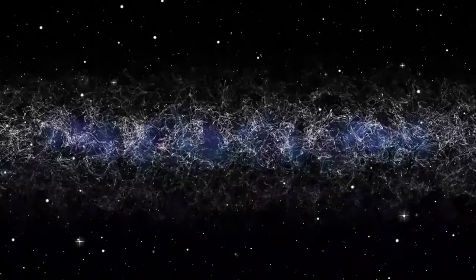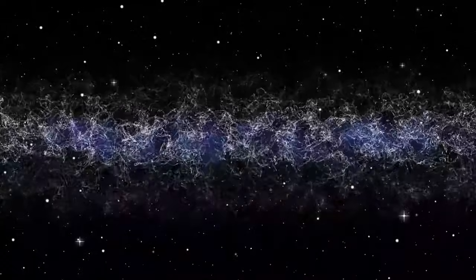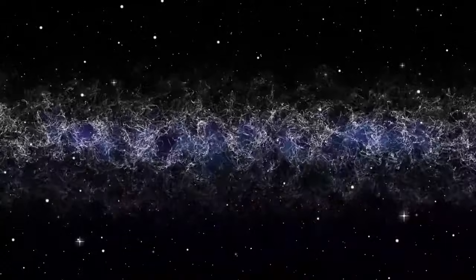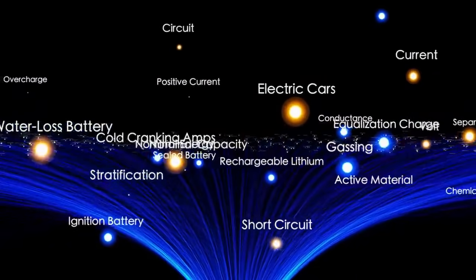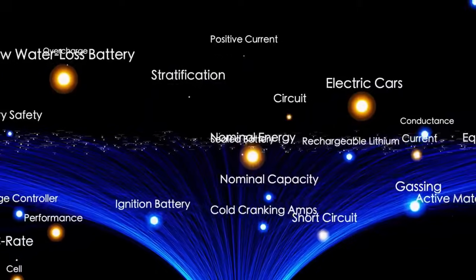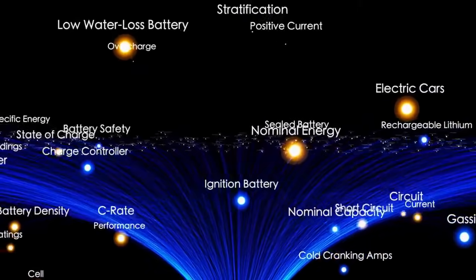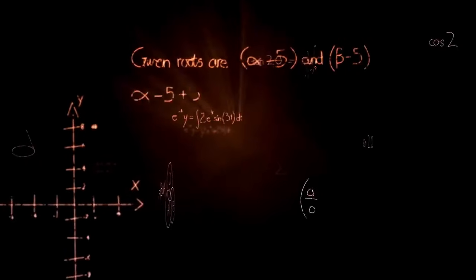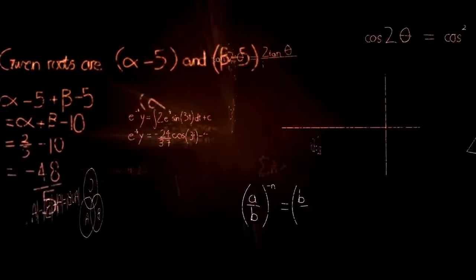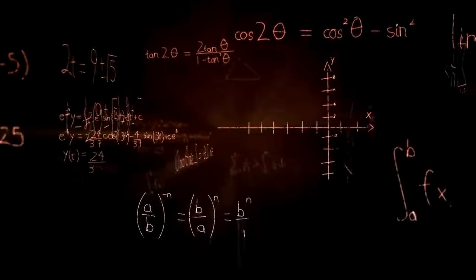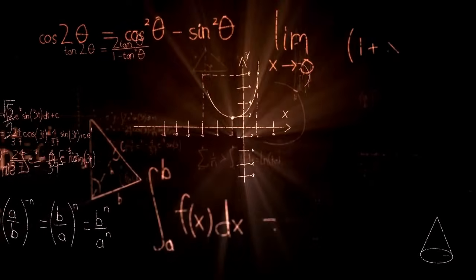However, the existence of dark flow remains controversial and has not been widely accepted by the scientific community. Some studies have suggested that dark flow is real and might be caused by a massive structure outside the observable universe, which exerts a gravitational pull on galaxy clusters. Yet other studies have failed to confirm its existence and instead propose alternative explanations, such as observational errors or limitations in data processing.